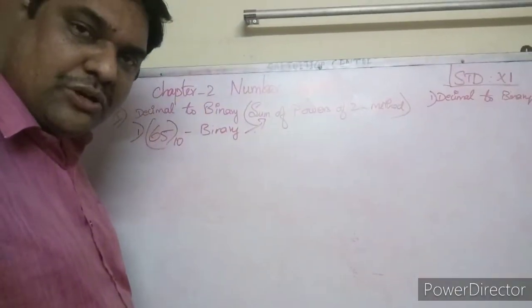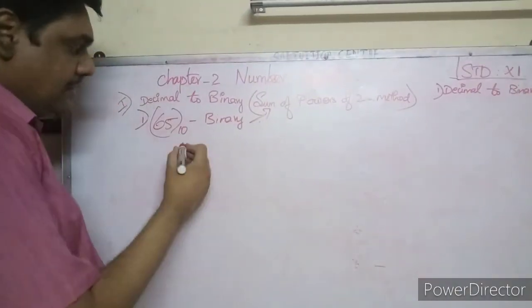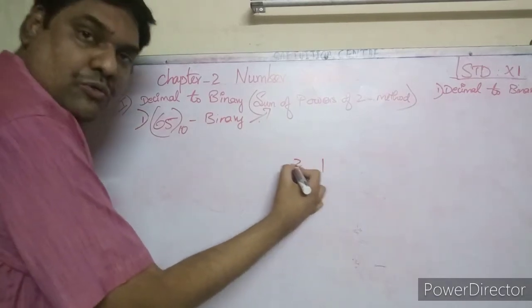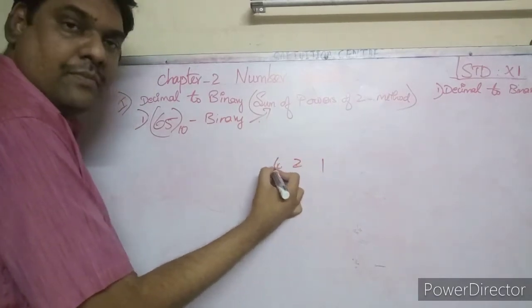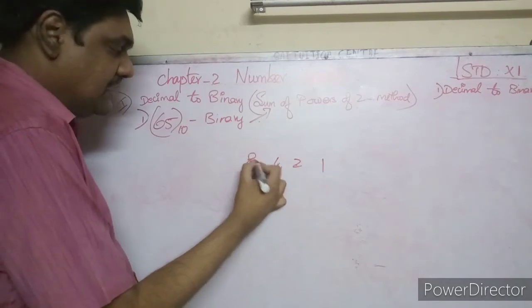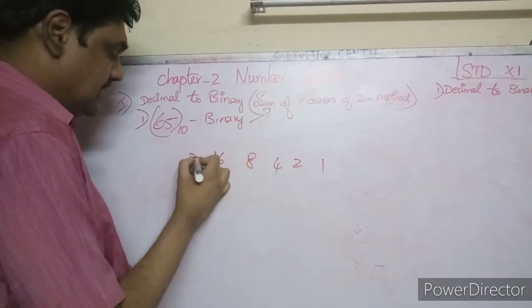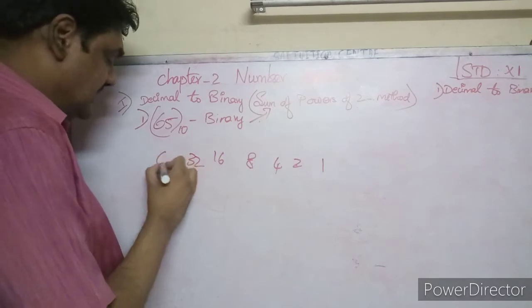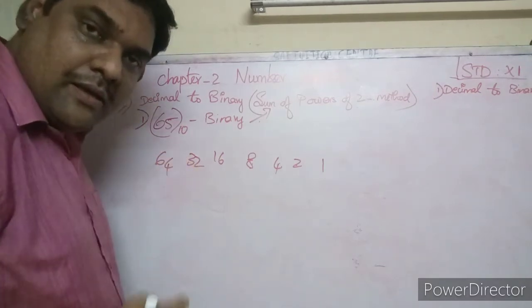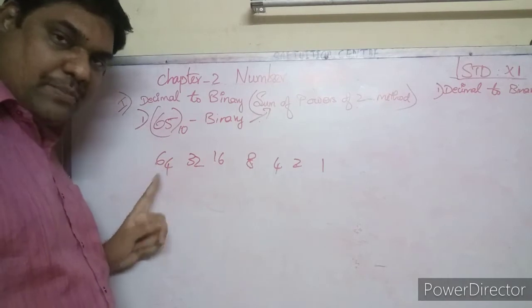First, put 1 in the first place and keep doubling: 1, 2, 4, 8, 16, 32, 64. We stop at 64 because the next value would exceed 65.